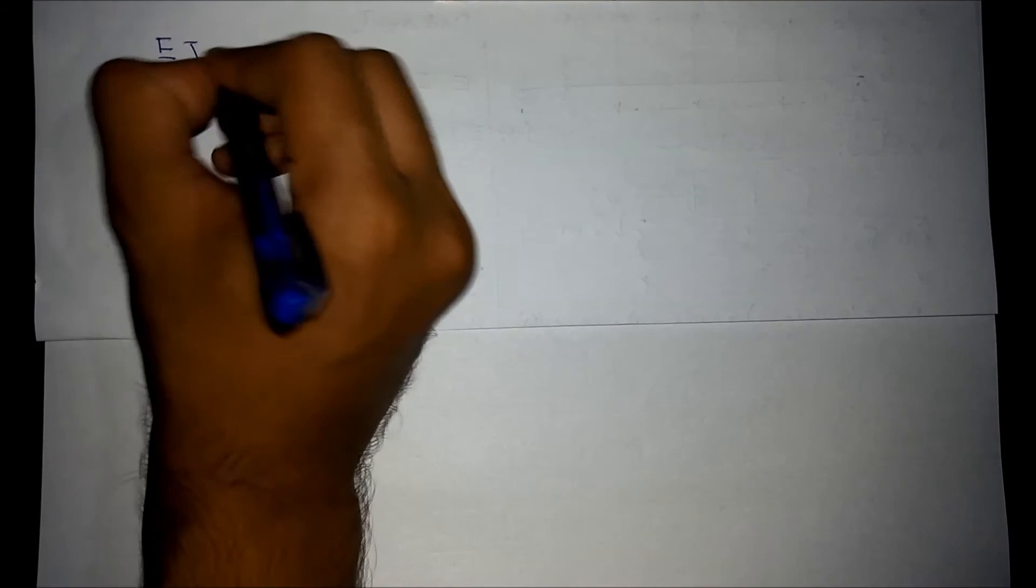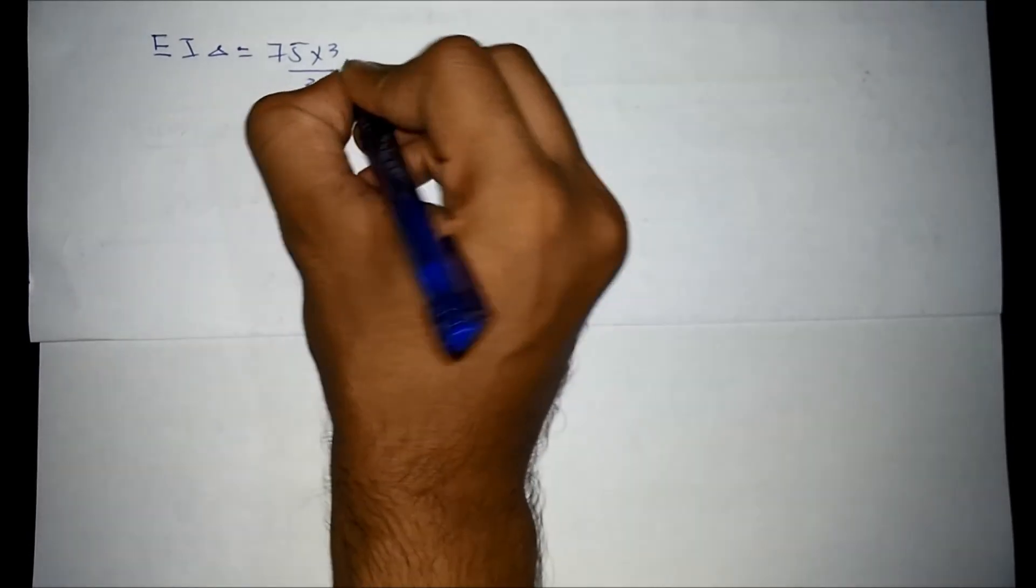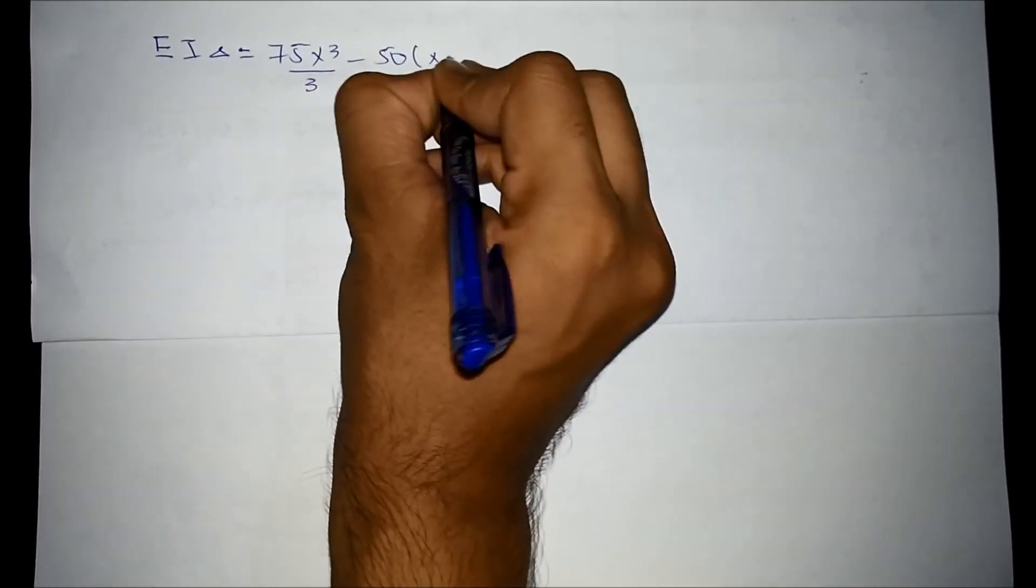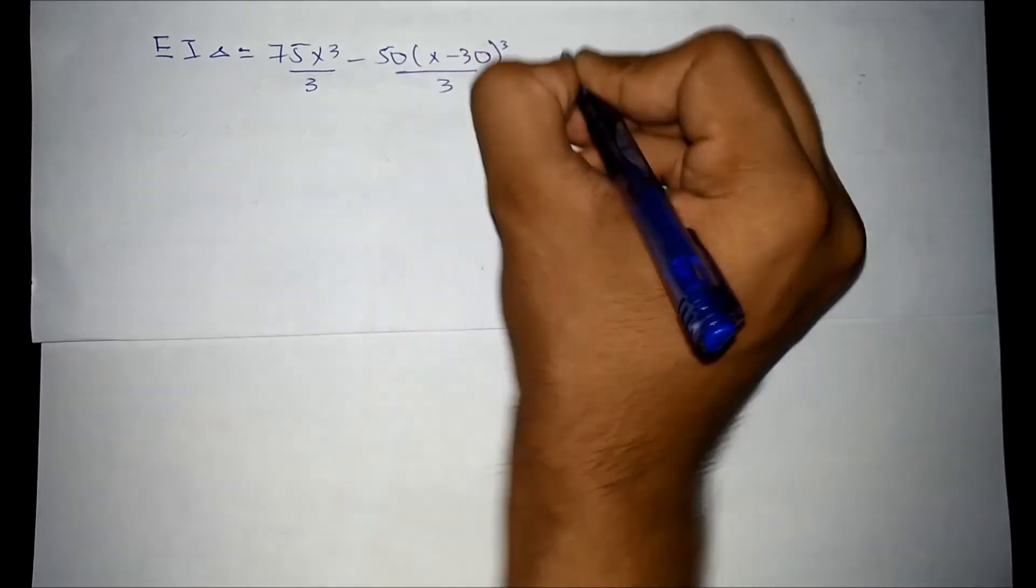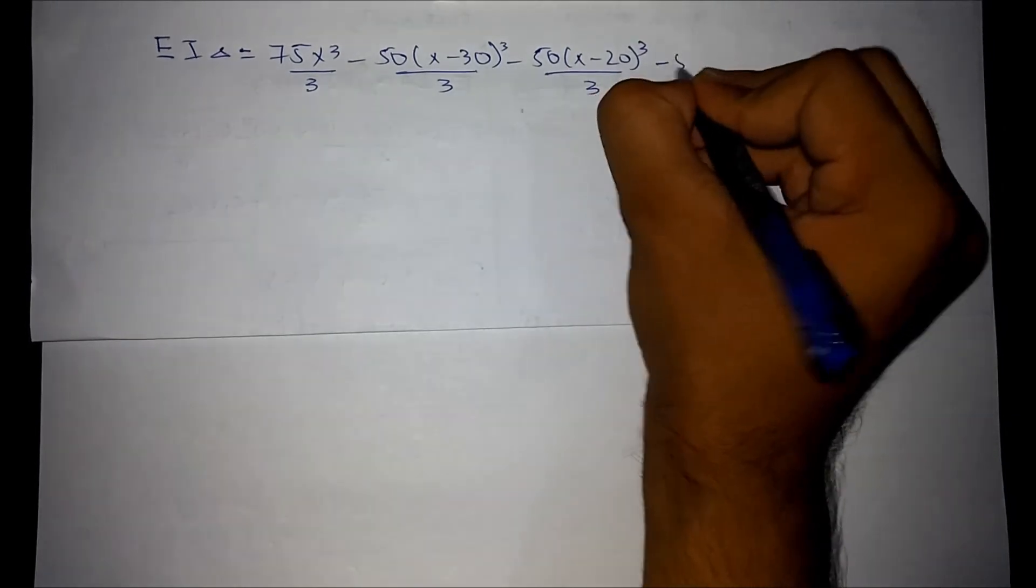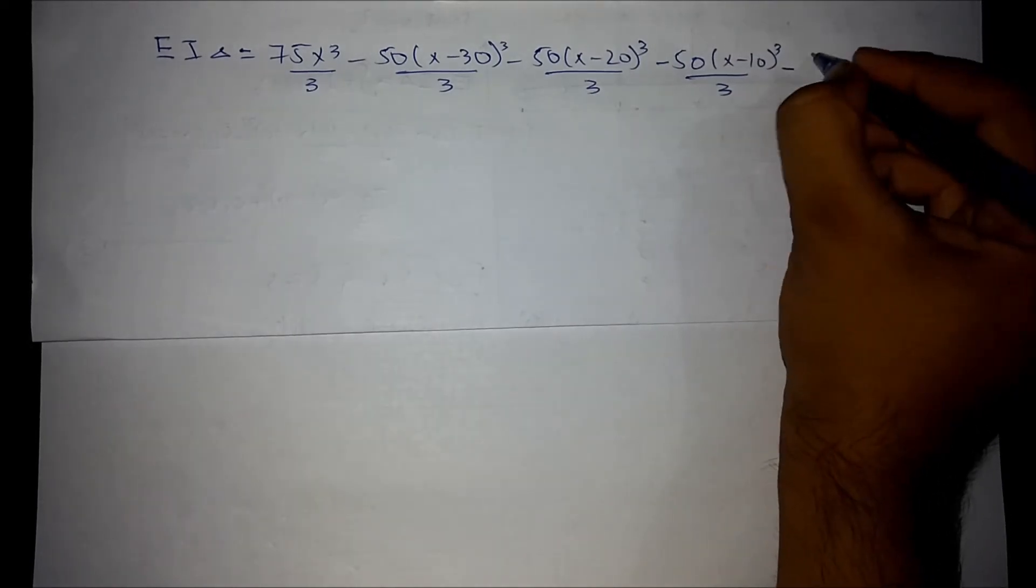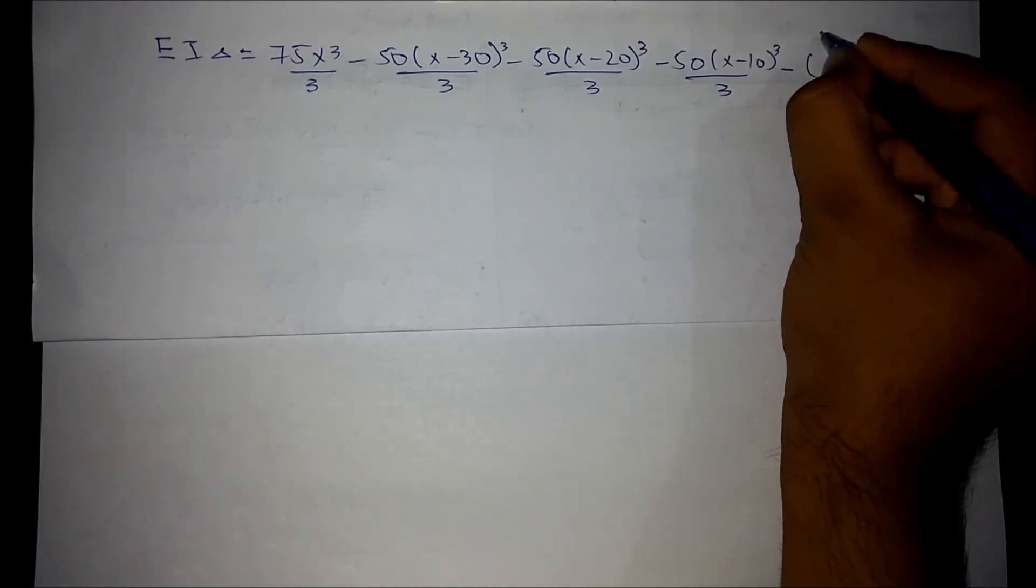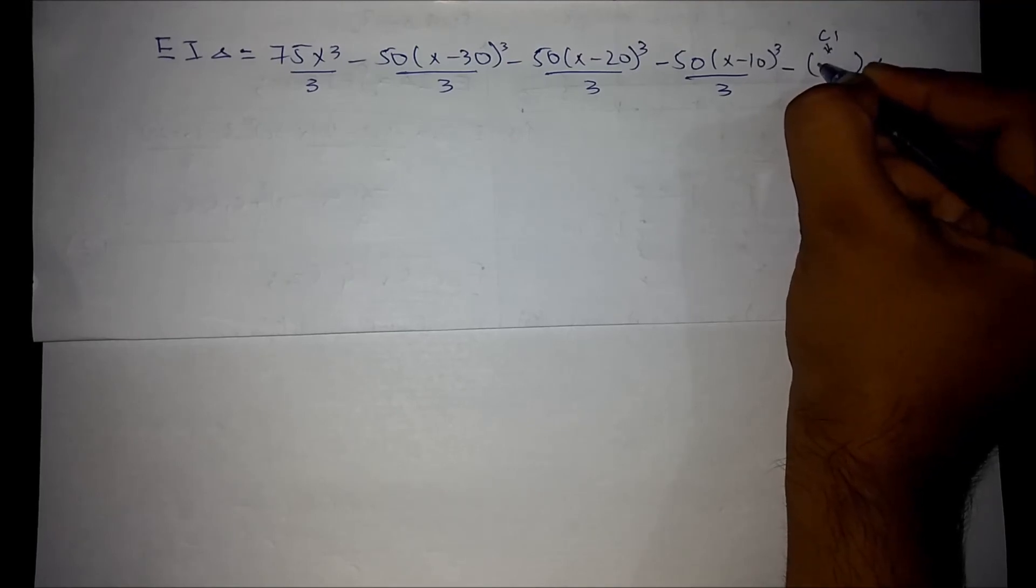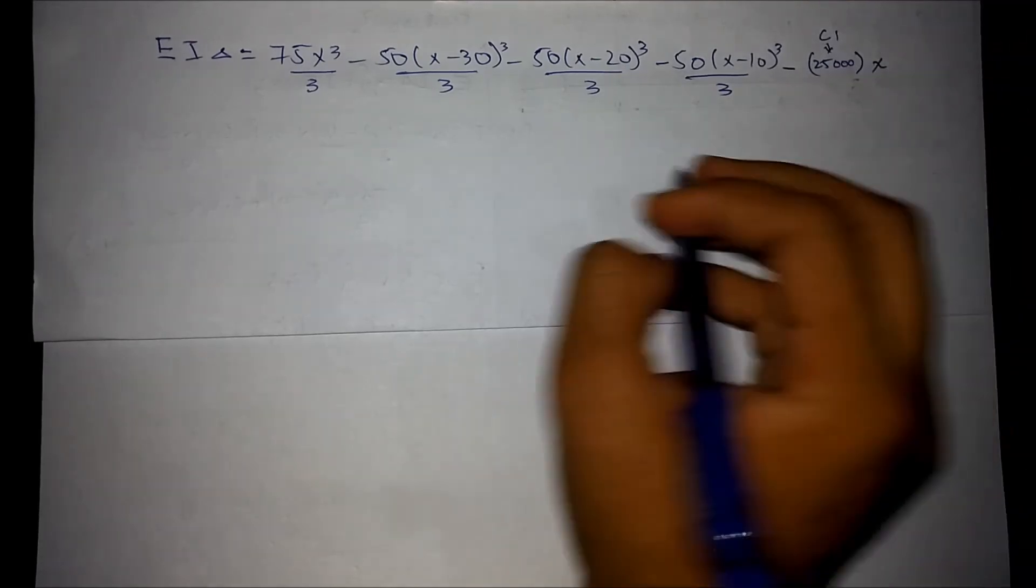Substituting the values of c1 and c2 in equation number 2, we get the final deflection equation. And then minus 25,000 was plugged as c1 and c1 was negative already.